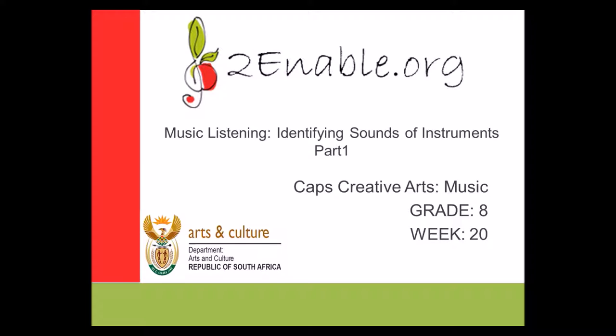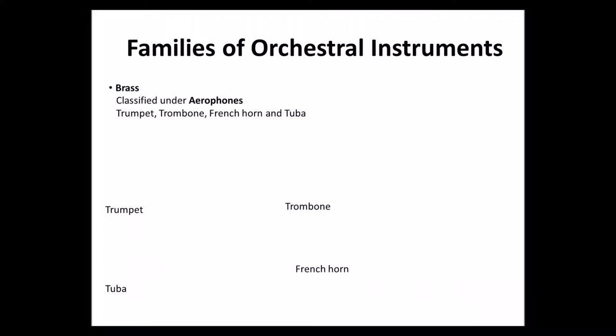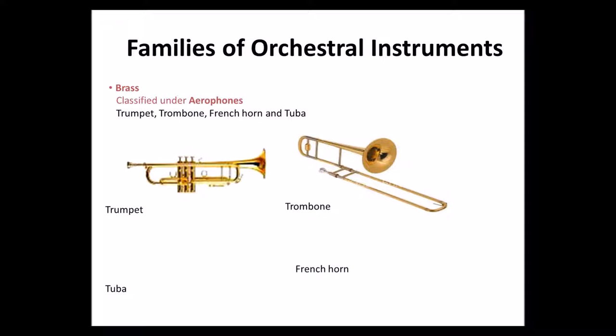We're going to be looking at the families of orchestral instruments. The first one is brass, classified under aerophones. Some examples are the trumpet, the trombone, the French horn, and the tuba. This is how they look like — this is the trumpet, then we have the trombone and tuba.